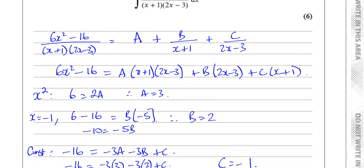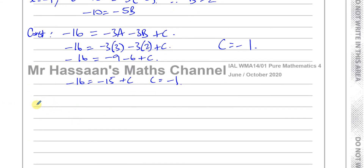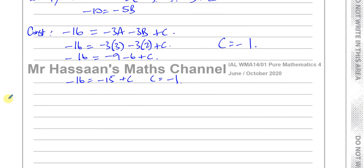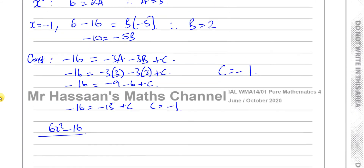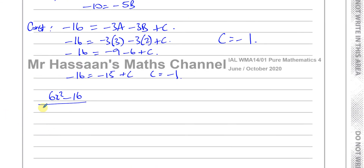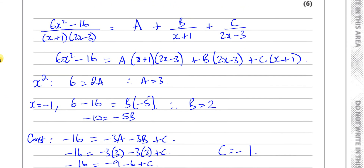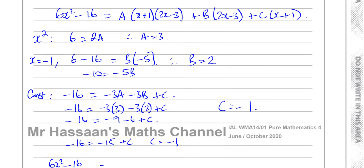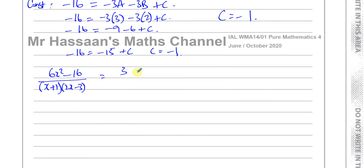So now we can write our original fraction: 6x² − 16 over (x+1)(2x−3) equals 3 plus 2 over (x+1) minus 1 over (2x−3). This is now ready for us to integrate.